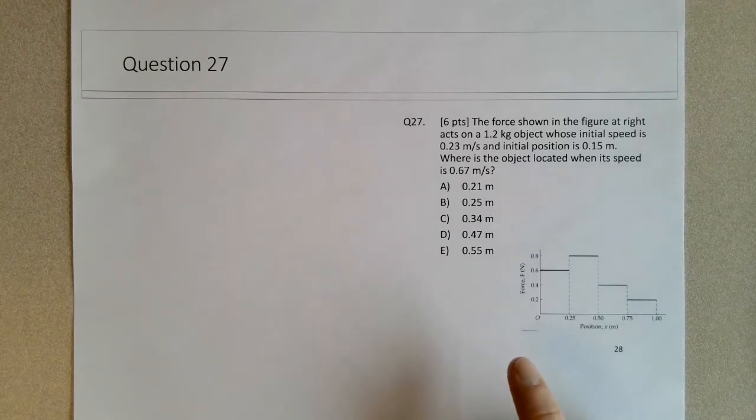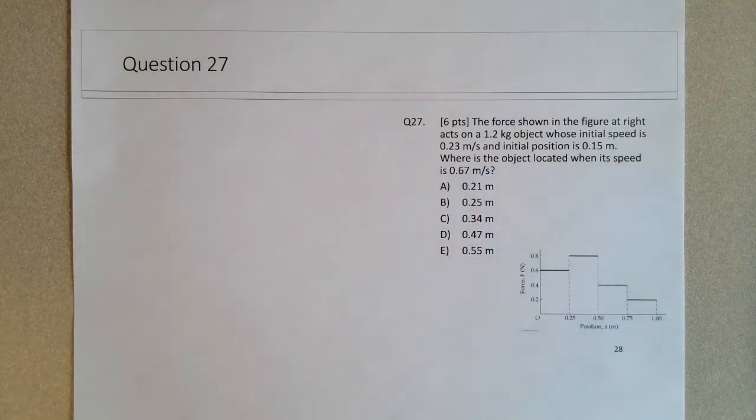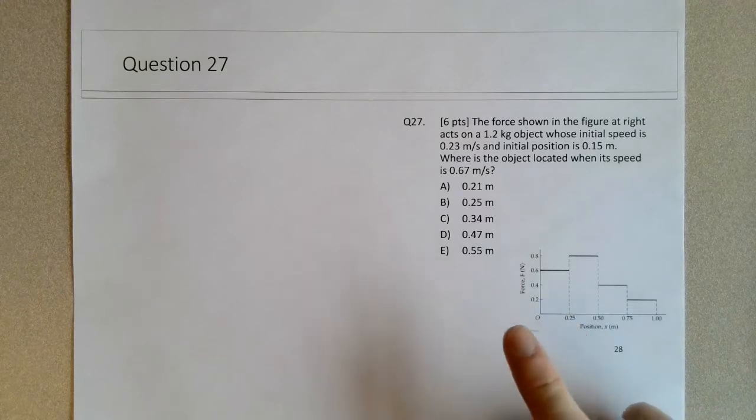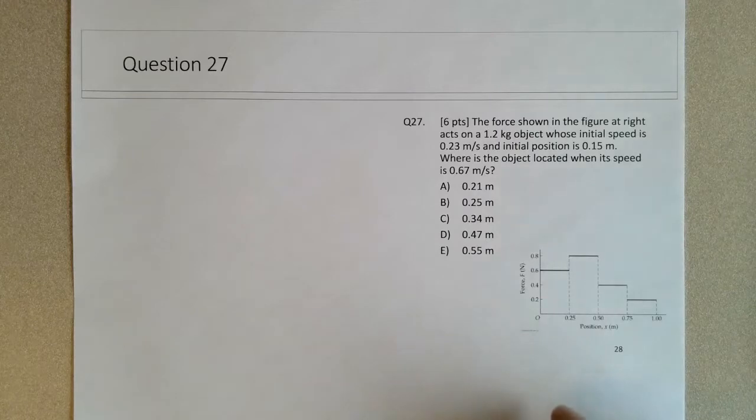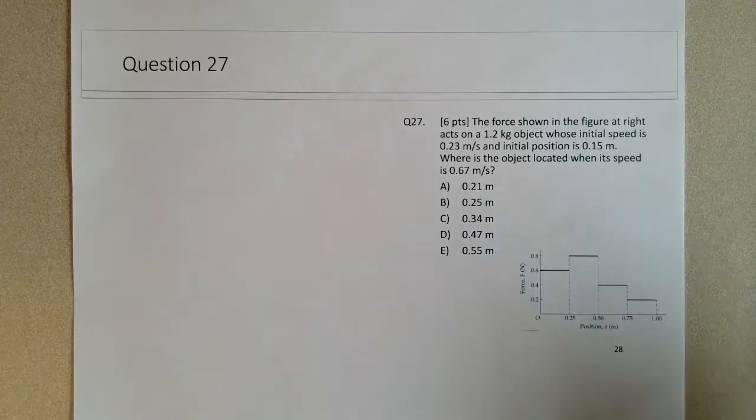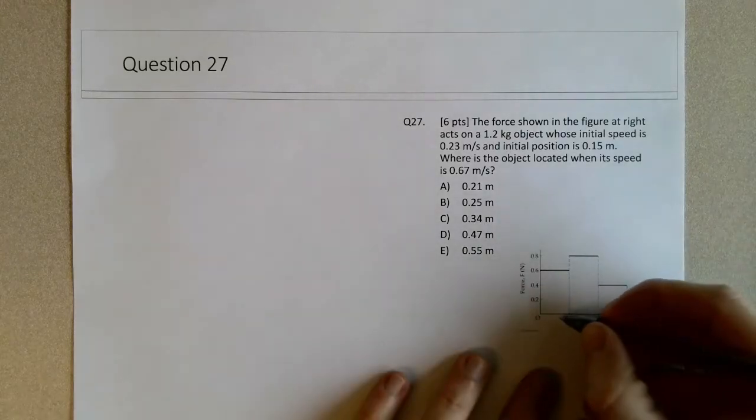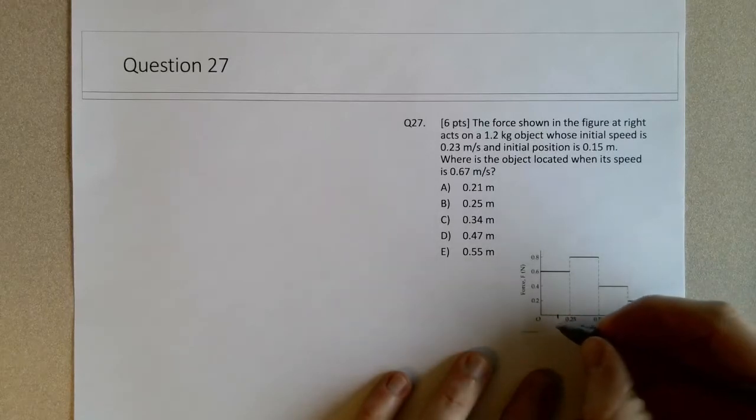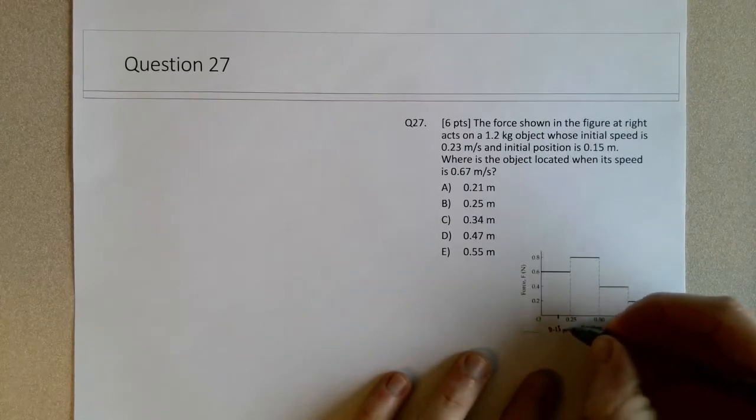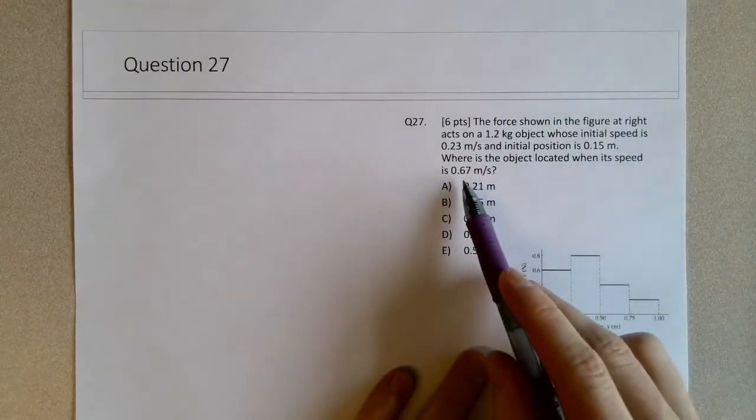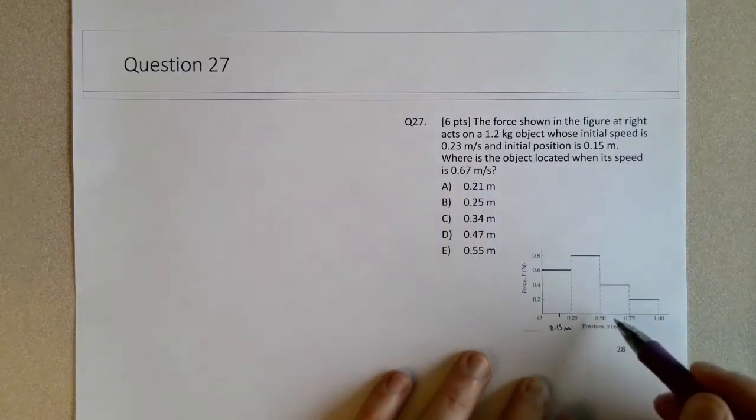We have a change in speed, an increase from 0.23 to 0.67 m/s. For speed to increase, there must be an increase in kinetic energy, so the work must be positive. For the work to be positive, force and displacement must have the same direction. Since it starts at about 0.15 meters and moves to a higher speed, it must be moving to the right.